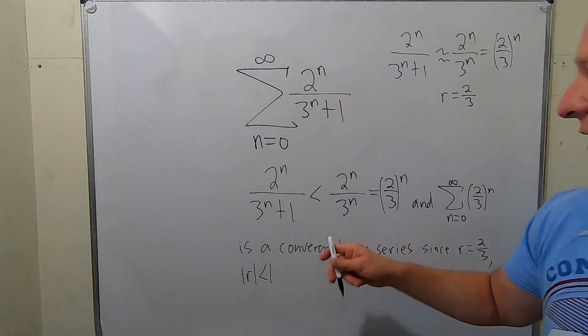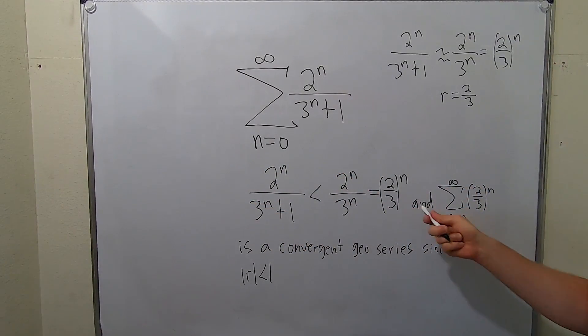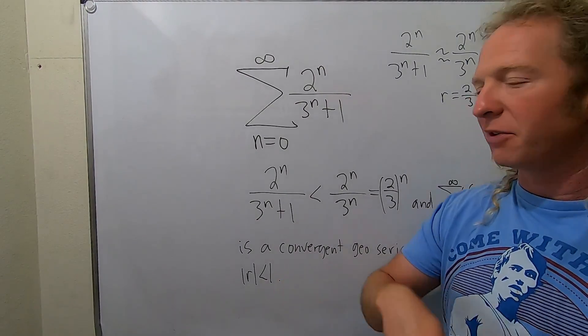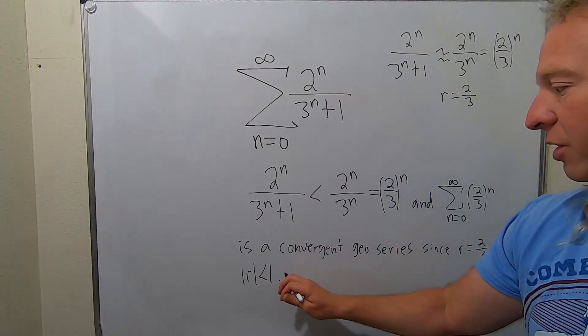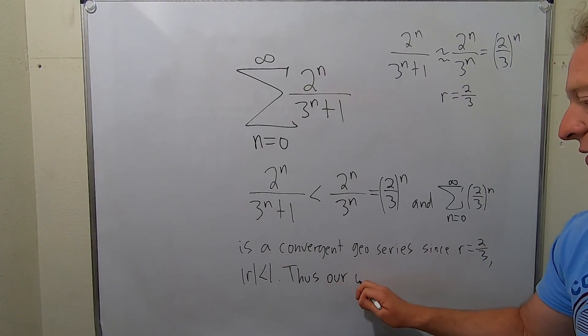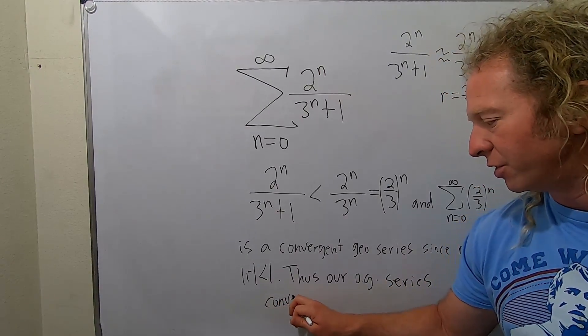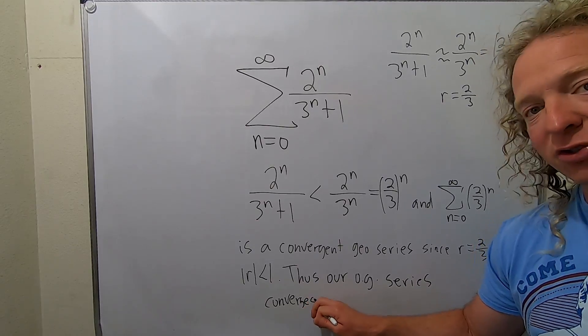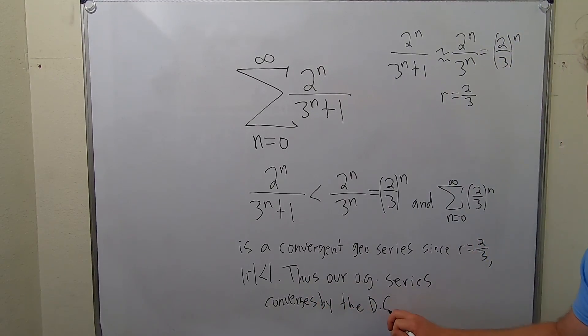So we have that this is less than this. And if you add all of these guys up, you get a convergent geometric series. Therefore, by the direct comparison test, our original series should also converge. So thus, our original series, I'll just say OG, OG means original series, converges by the direct comparison test. I'll just say by the DCT.